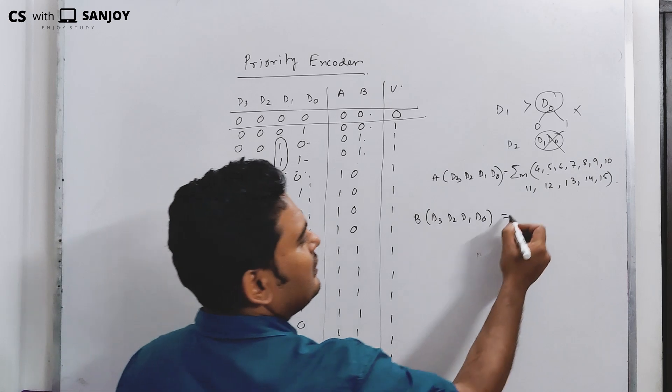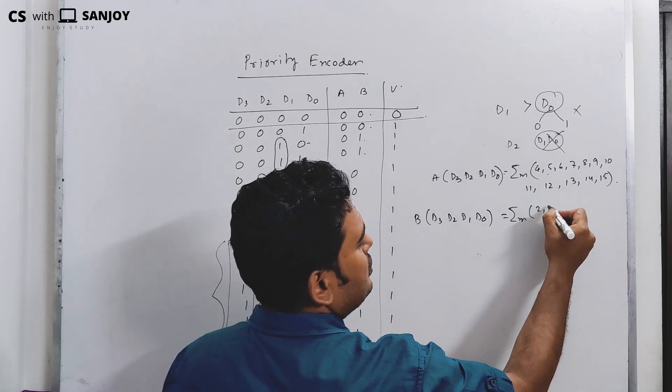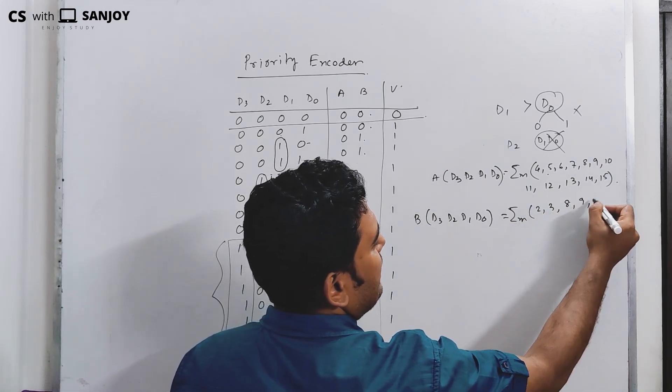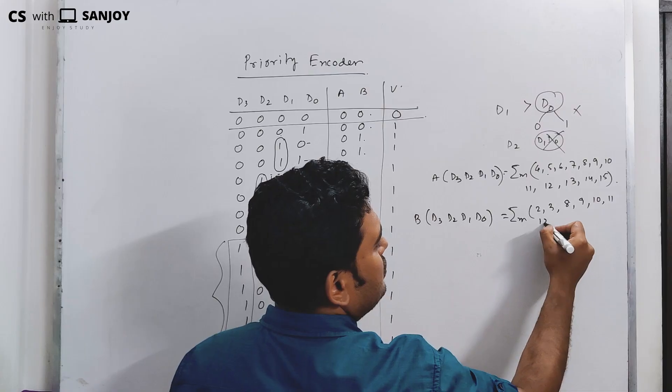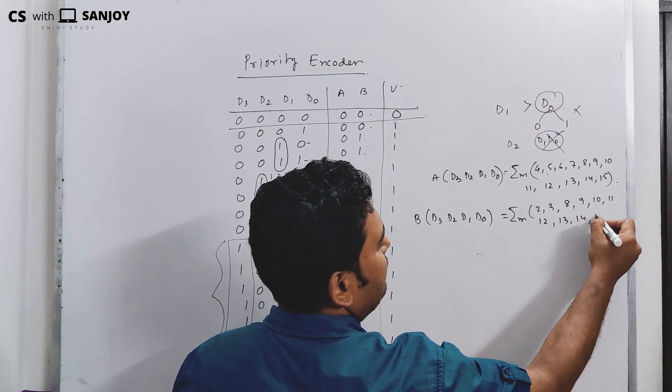The summation of minterms for B is: 2, 3, 8, 9, 10, 11, 12, 13, 14, 15.